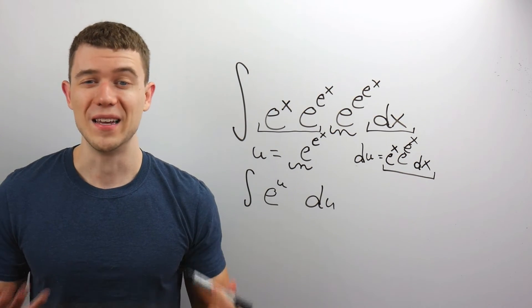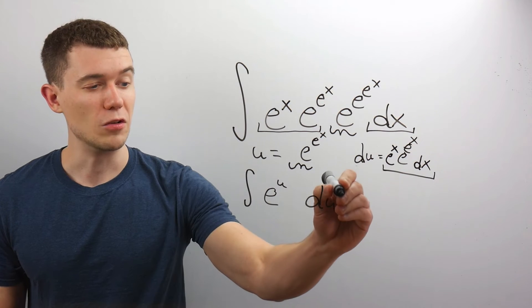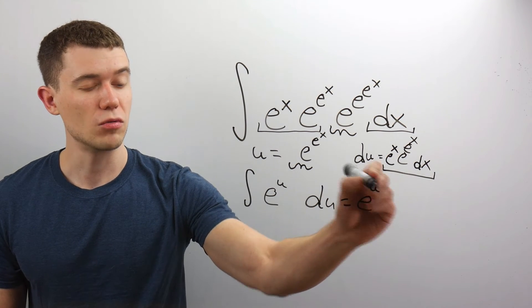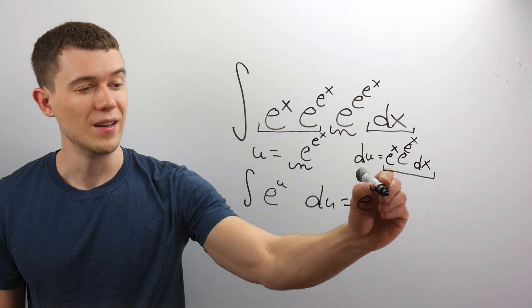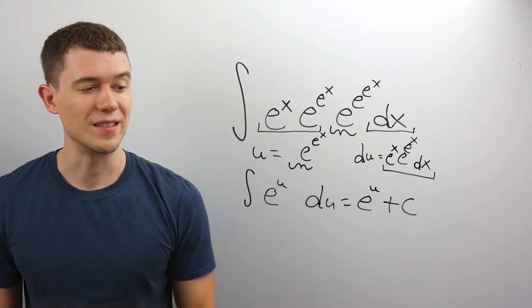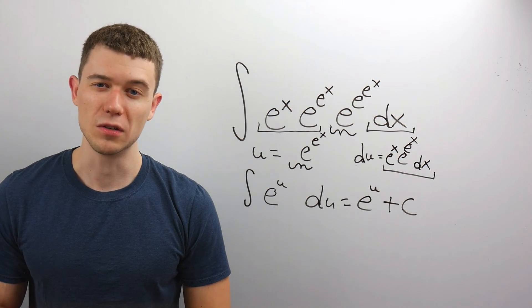That's really nice. We know what the antiderivative of e^u is — it's just itself. The antiderivative of e^u du is e^u + C. Every good indefinite integral deserves a plus C.